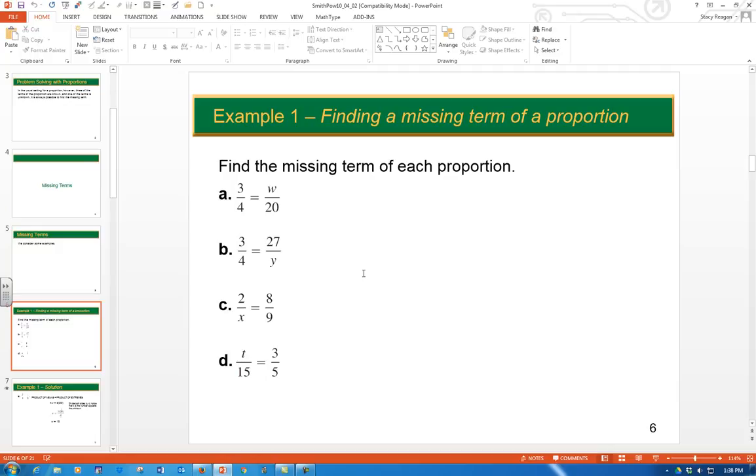It says find the missing term for each proportion: 3/4 equals w over 20, 3/4 equals 27 over y, 2 over x equals 8 over 9, and t over 15 equals 3/5.